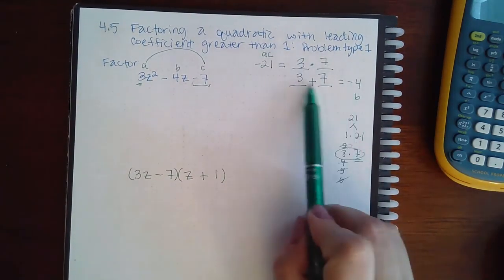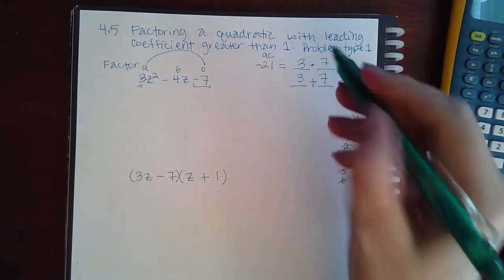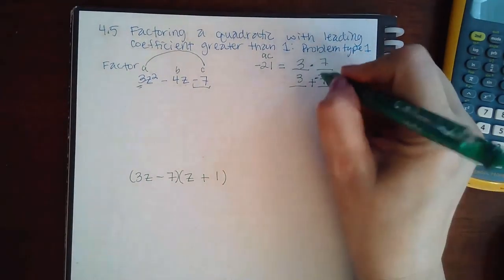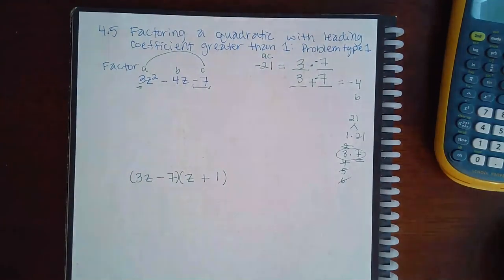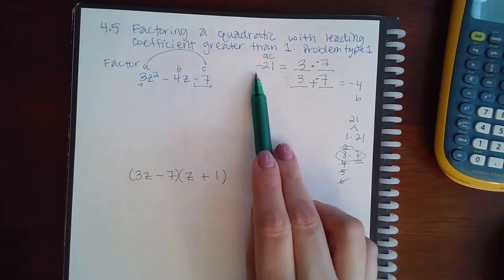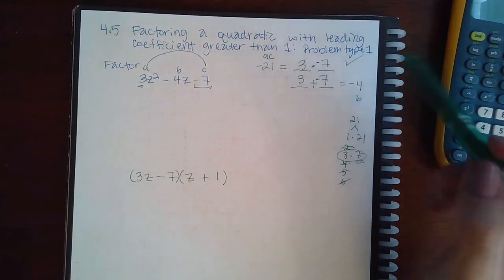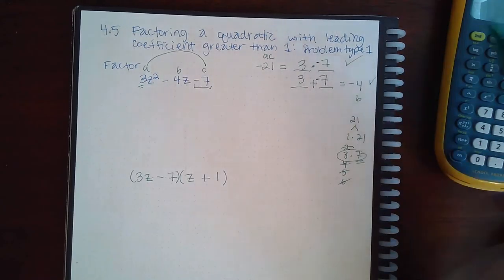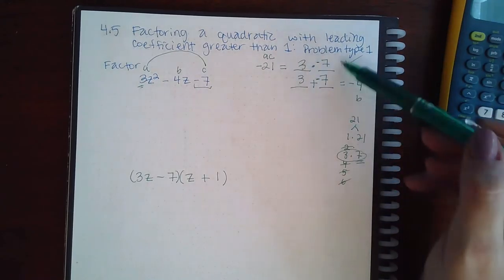But I need to get a negative 4 when I add these two, which means this guy's gonna have to be negative. And if that's negative, it needs to be the same up top. Double check: is 3 times negative 7 equal to negative 21? Yes. Is 3 plus negative 7 equal to negative 4? Yes.